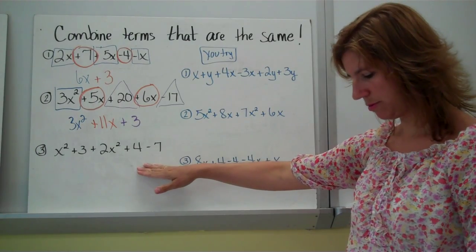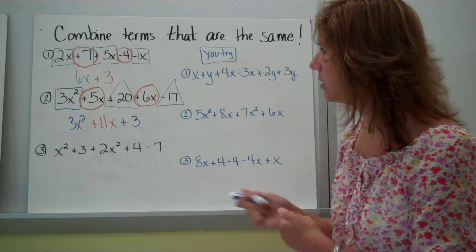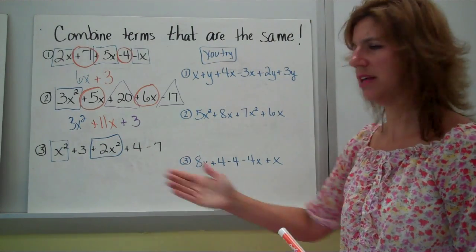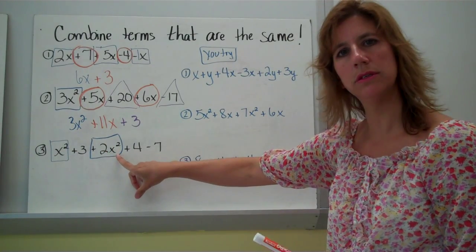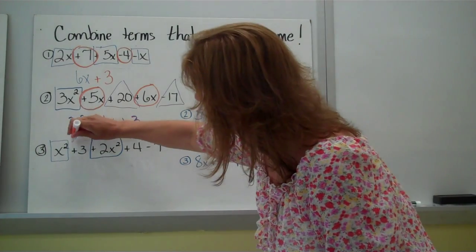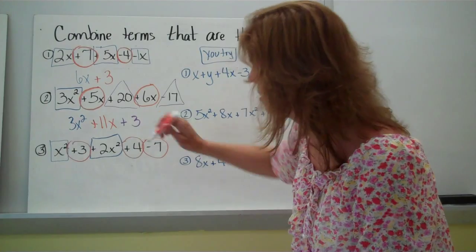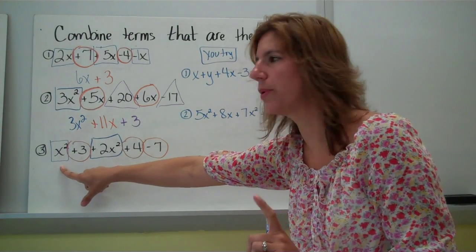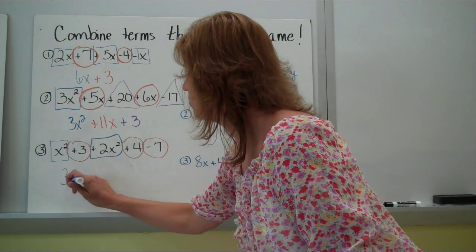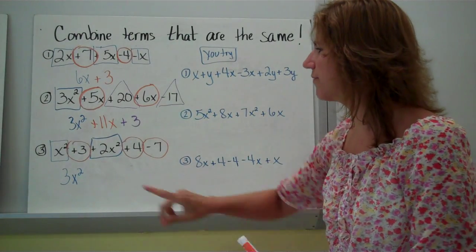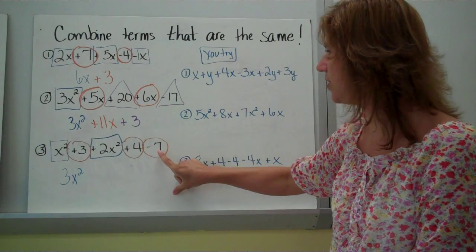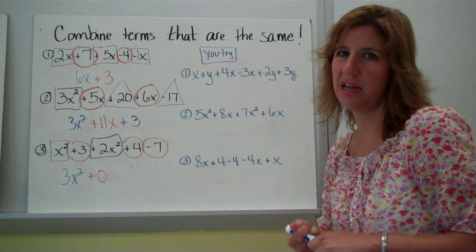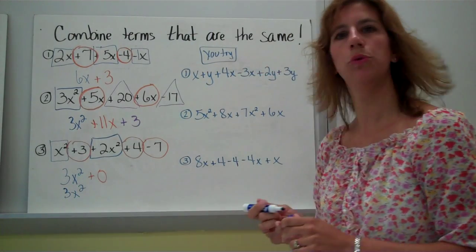Let's do one more together — jot this one down. Here's my x squared values: I'm going to put them together. As I look across, I have no plain x values, no y's — all I have left is x squareds and constants. For the x squared terms: that's 1x squared plus 2 more x squareds, giving me 3x squared. For the constants: 3 plus 4 is 7, and 7 minus 7 is 0. So I can write 3x squared plus 0, or you can leave off the 0 altogether, because any number plus 0 is itself. Either answer would be counted correct.